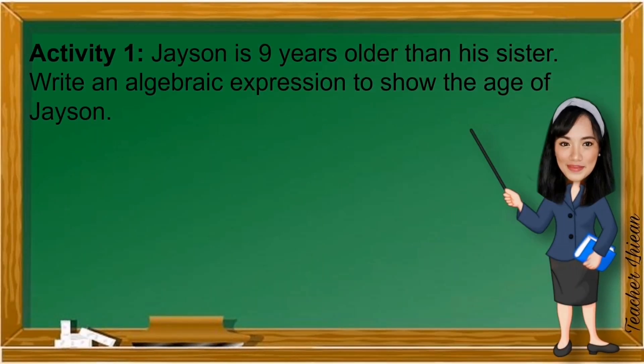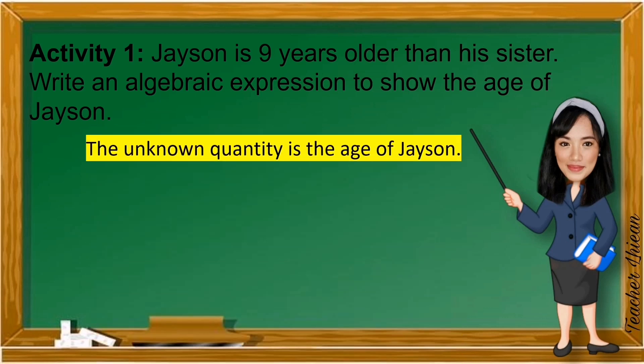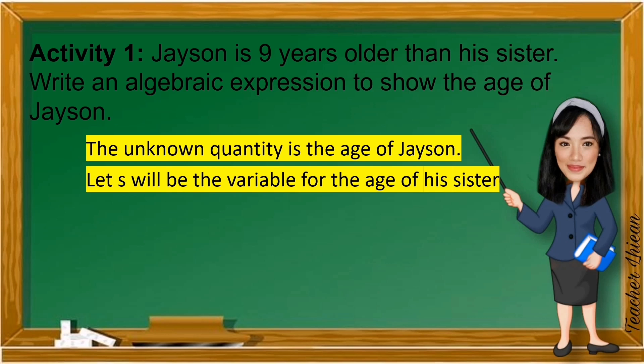Activity 1. Jason is 9 years older than his sister. Write an algebraic expression to show the age of Jason. First, we have to identify the unknown quantity and assign variable to represent it. The unknown quantity is the age of Jason. Let S will be the variable for the age of his sister. Since the sister starts with S, we can use S for the variable.